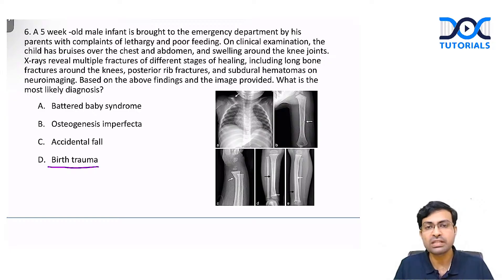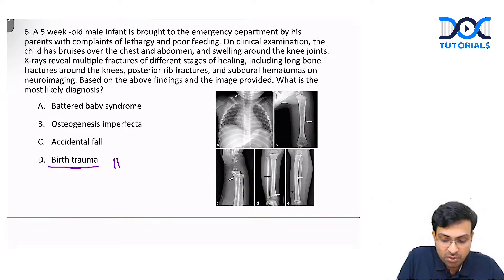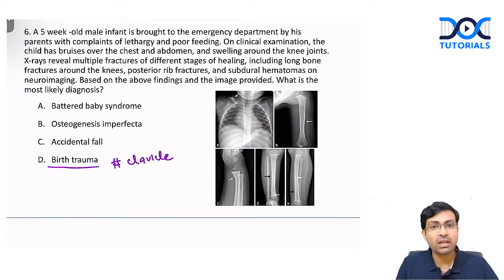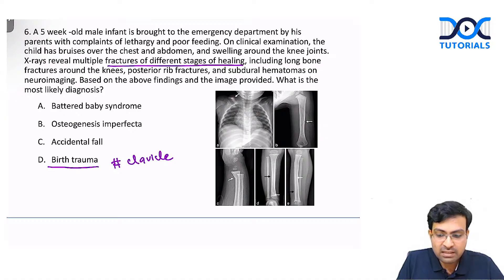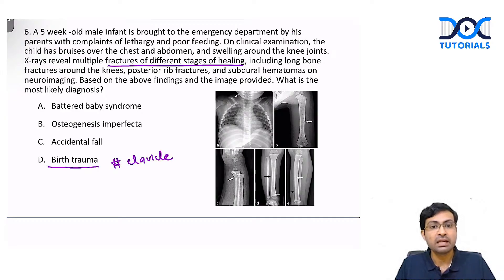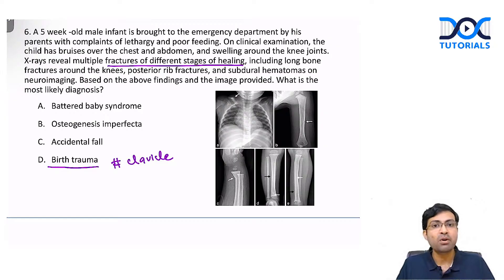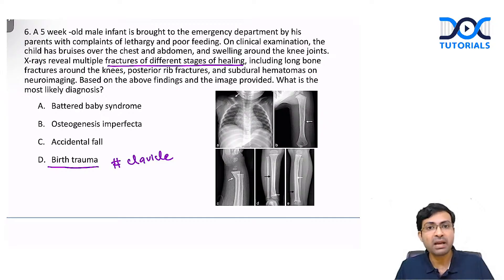Starting with birth trauma: it can cause clavicle fractures during shoulder dystocia, but multiple fractures in different stages of healing are impossible in birth trauma since it is a single event. The different stages of healing indicate the child had multiple traumas over time — one fracture perhaps last week, another a month back. As for accidental fall, a five-week-old cannot walk, run, or crawl, so accidental fall is not plausible.